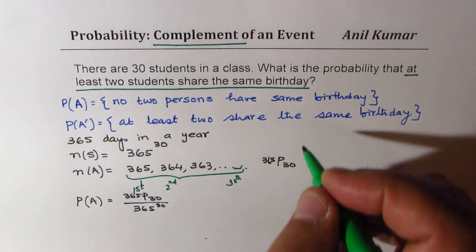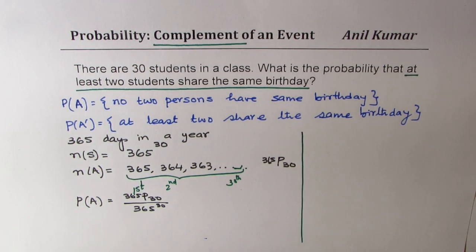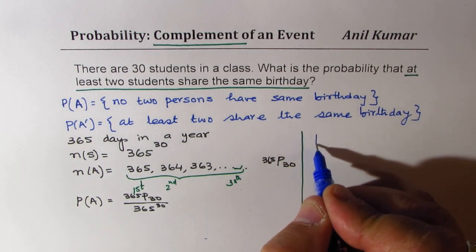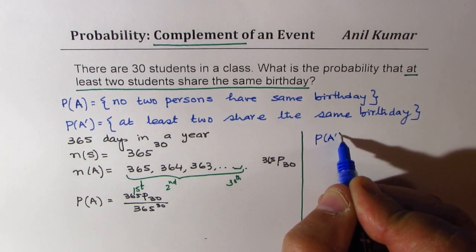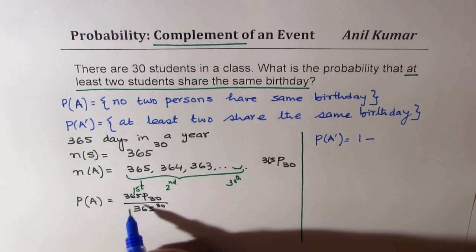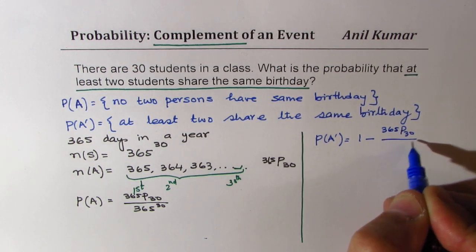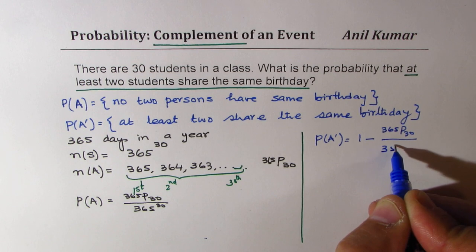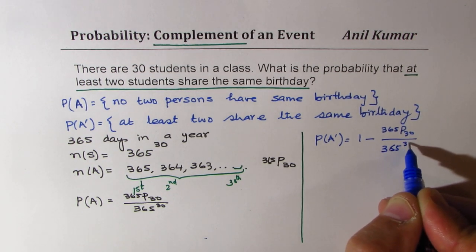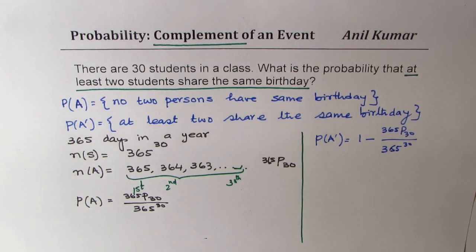Now what we are looking for is the complement of this. So what is the probability that at least two share the same birthday? So that should be probability of the complement is one minus this property. So that is how we could actually solve this particular question. So let's calculate this answer.